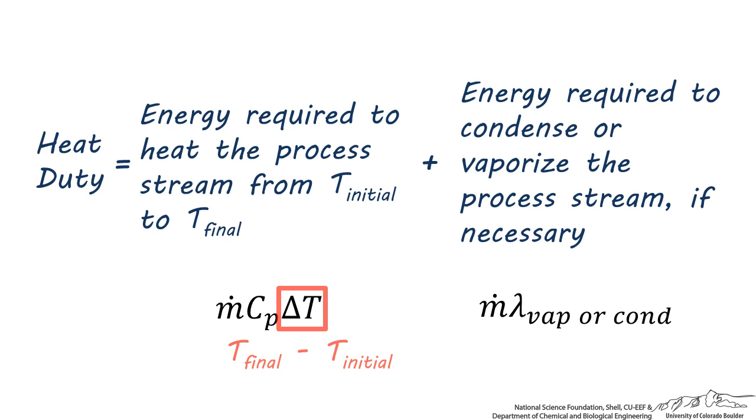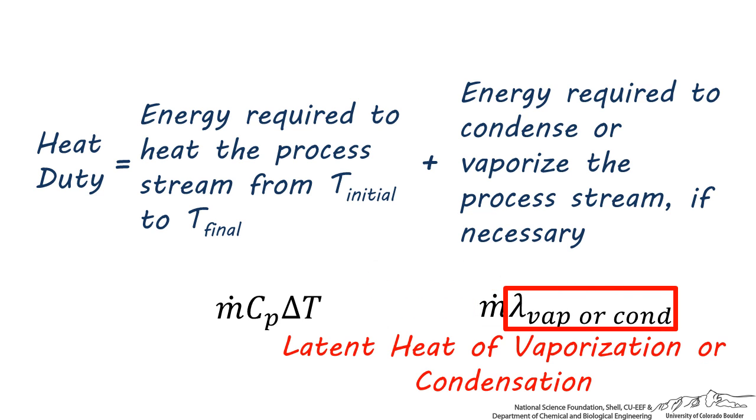For the latent heat formula, m dot is the flow rate of the process stream, and lambda is the heat of vaporization or heat of condensation for that process stream. This lambda term refers to the energy required per mass or per mole to change the phase of the process fluid.